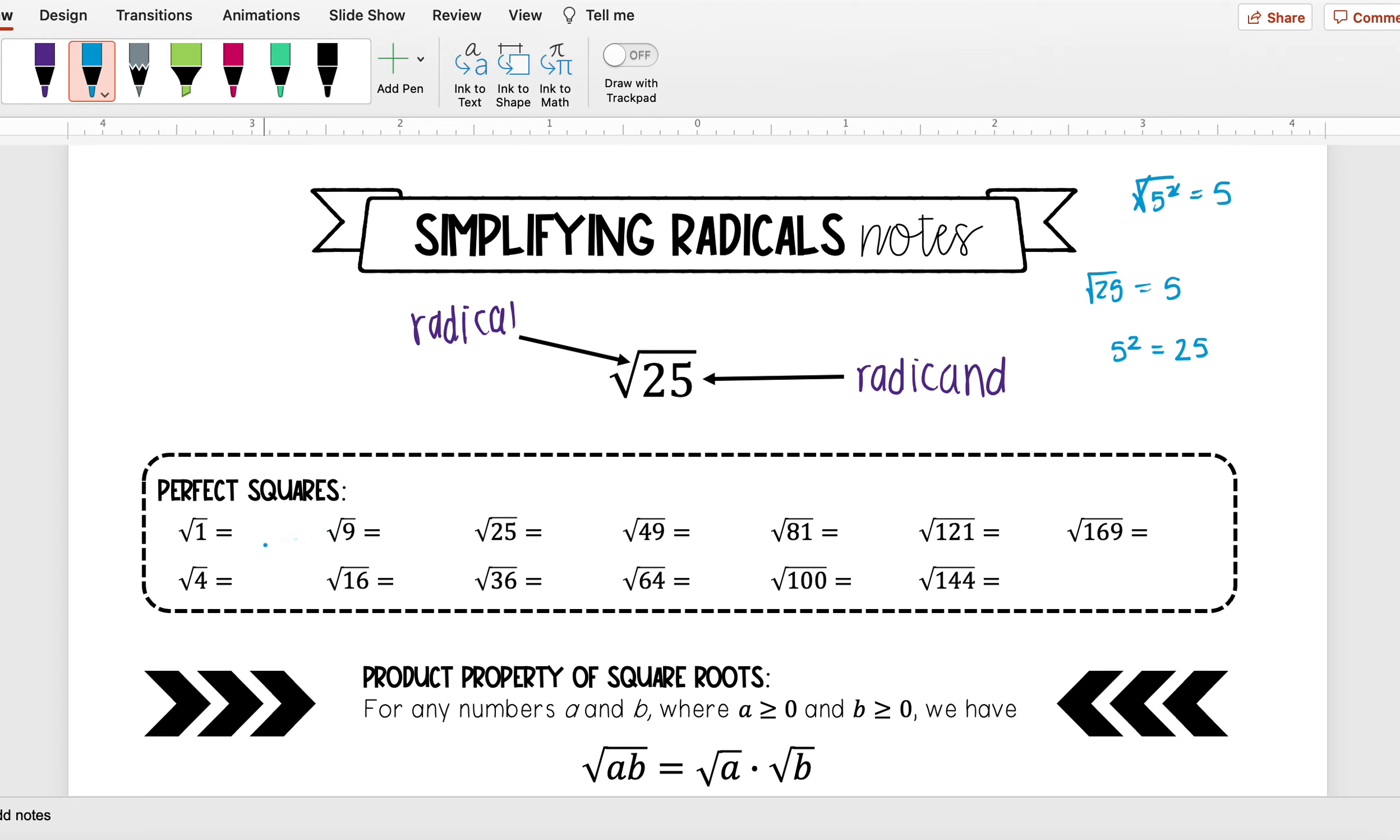You can use a calculator for all of these, but we'll just go through what they are. The square root of 1 is 1, square root of 4 is 2, square root of 9 is 3.